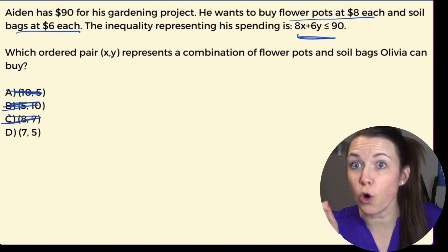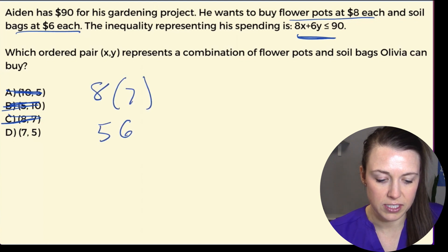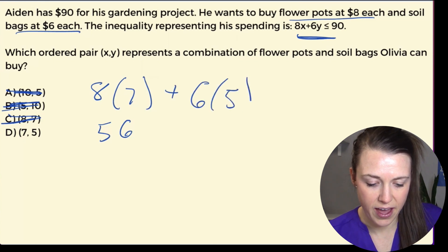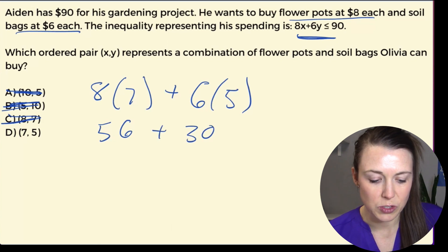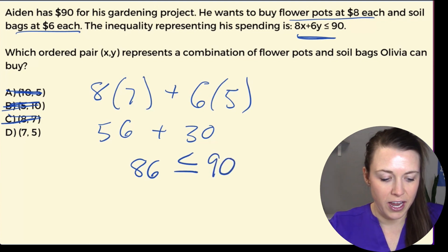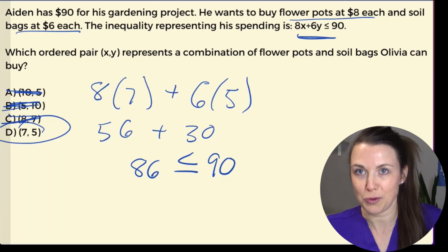And finally D, let's hope it works. Fingers crossed. We have 8 times 7, which we know is 56, plus our 6 times 5 is going to be 30. My friends, looks like we're doing well. I have 56 plus 30 is going to be 86, which is indeed less than 90. So that means our answer here is D. They can buy 7 flowerpots and 6 bags of potting soil.